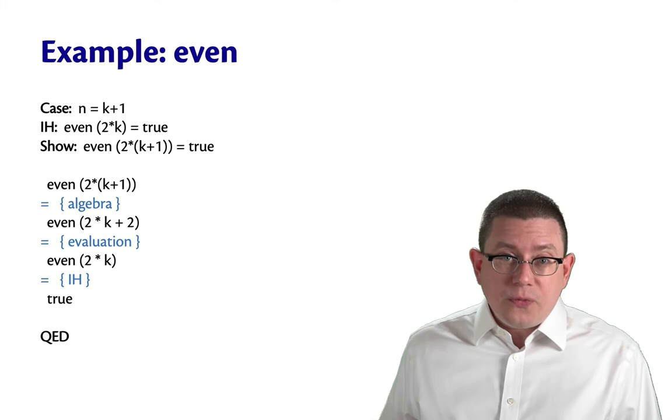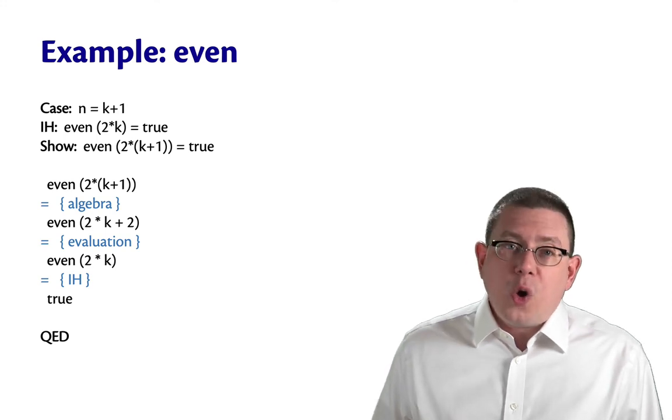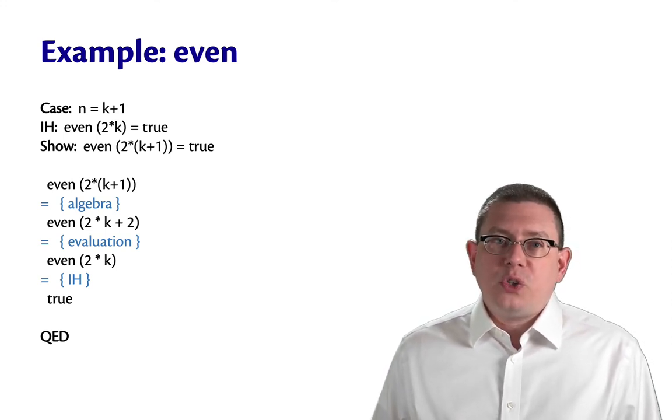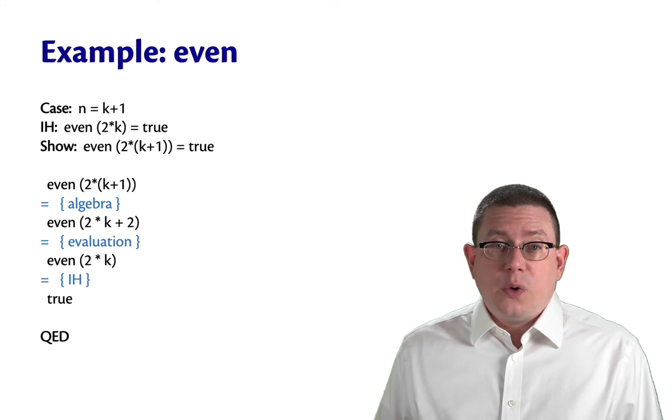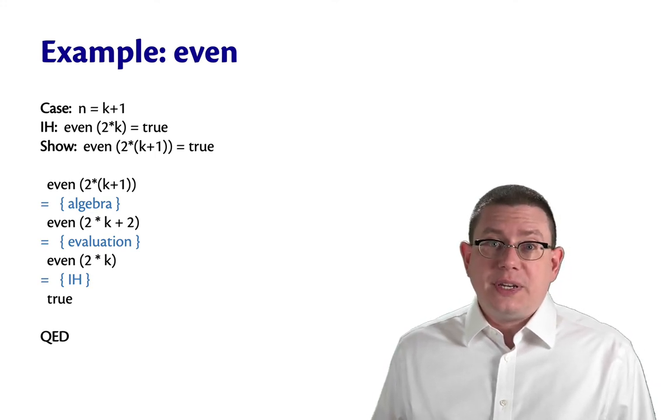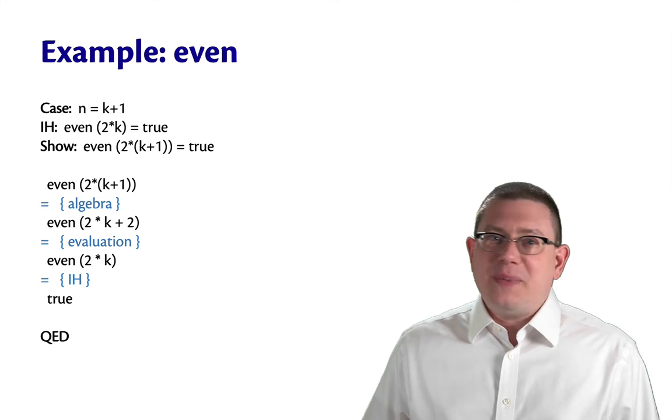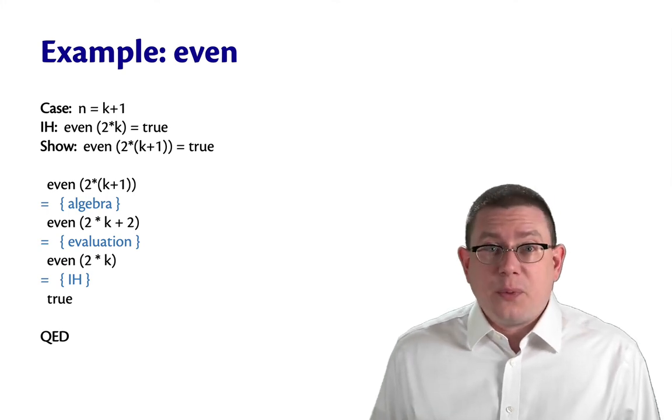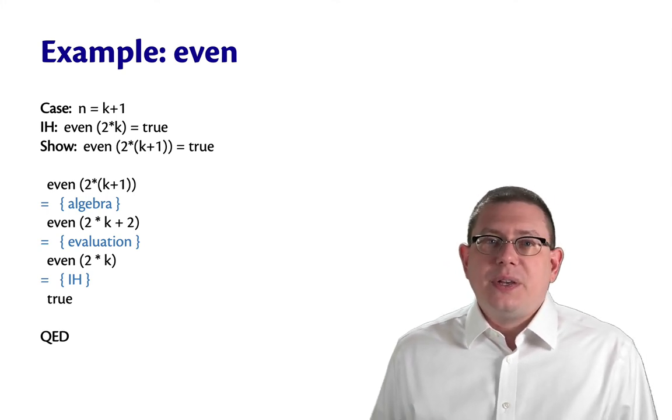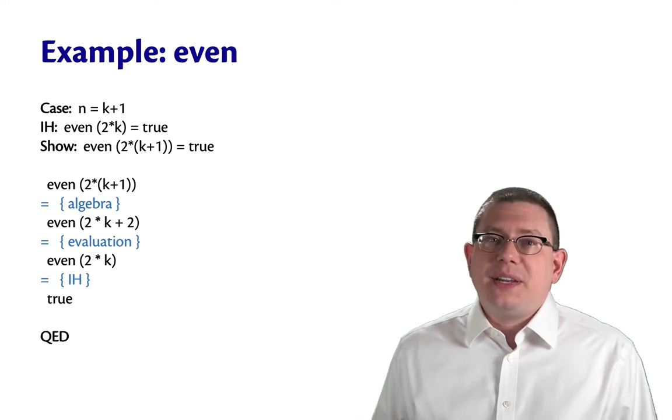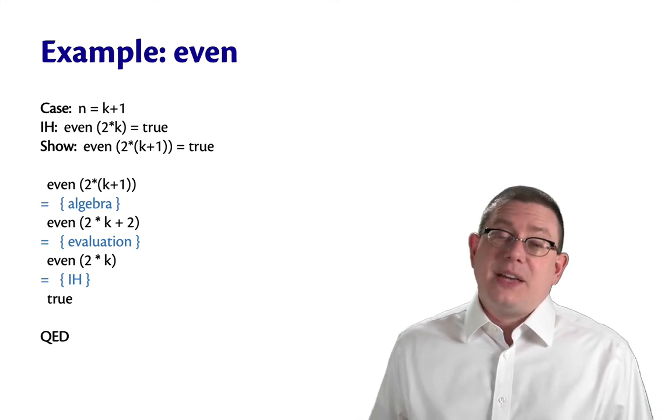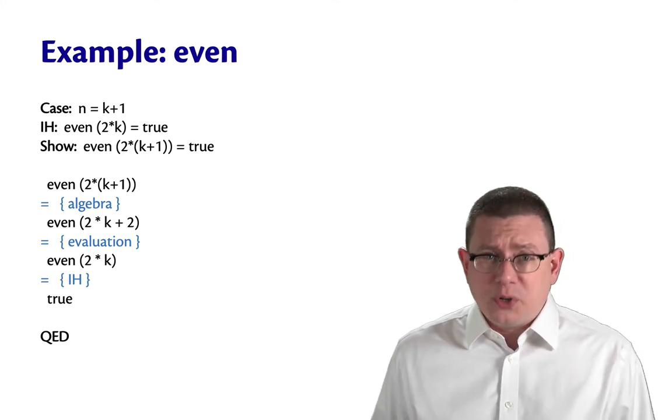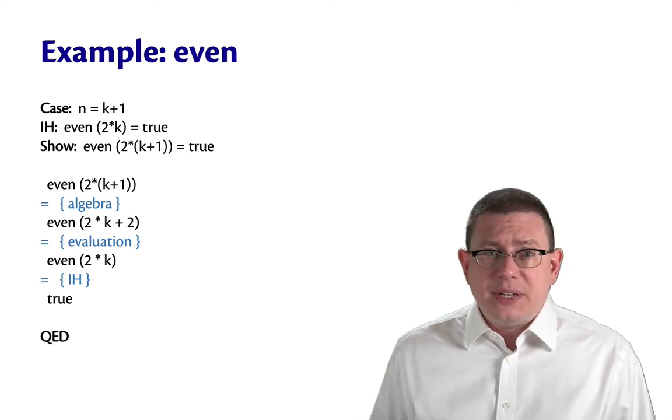But we're going to ignore those corner cases. We wouldn't have to. It is possible to do formal reasoning about 63-bit integers. It's just not something we're going to tackle here because it's harder. So I'm going to justify this by algebra, not exactly by evaluation. Because I know that by algebra, this is how numbers ought to work if they weren't limited in size.